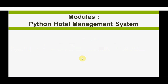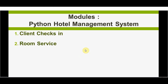We have four modules in our hotel management project. The first module is client check-in — whenever a new client checks in, the hotel admin should get their details like name, address, and phone number. Based on their choice of room type and availability, a room will be allotted. The check-in date should be noted. The second module is room service, where the room number is obtained as input, the admin provides the menu card, and the room service bill is calculated based on food items chosen.